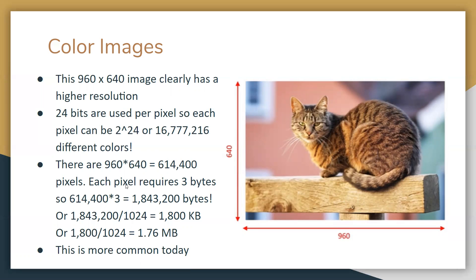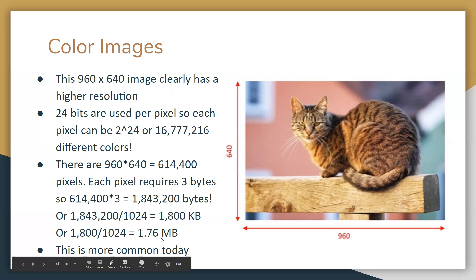When you do all the conversions, since there are 24 bits, that's the same as 3 bytes, so each pixel requires 3 bytes. With 614,400 pixels that each require 3 bytes, the whole image is 1,843,200 bytes, or 1,800 kilobytes. More appropriately in megabytes, this is a 1.76 megabyte picture.